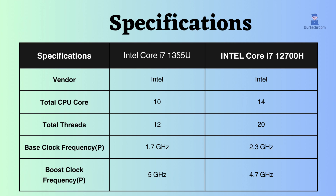The boost clock frequency of the Intel Core i7-1355U is slightly greater than the Intel Core i7-12700H, so under high CPU loads the Core i7-1355U performs a little better.